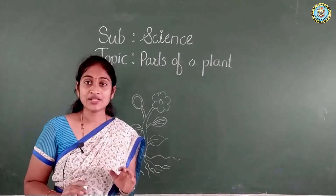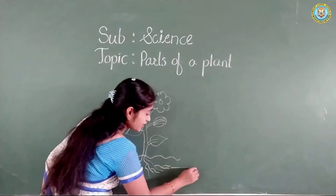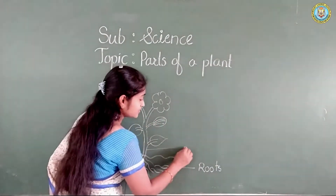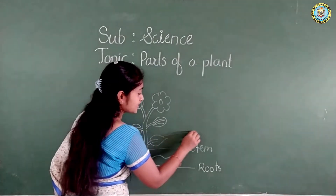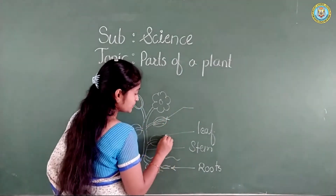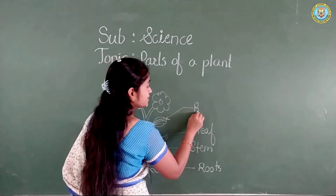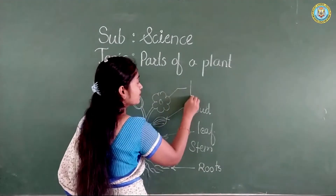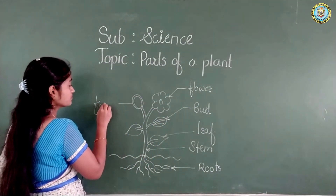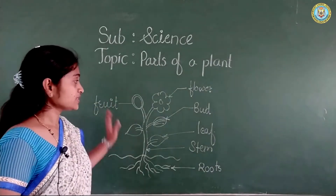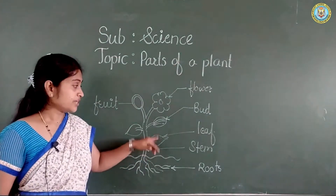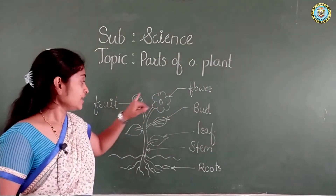So, let us quickly label those plants. Here, we learn roots. Then stem. Then, this is the leaf. Then, before the flower, which part came? Bud. Then, this one is flower. This is fruit. See, students, this is the developmental diagram of a plant. A plant having roots, stem, leaf, bud — then it develops into the flower, then the fruit.